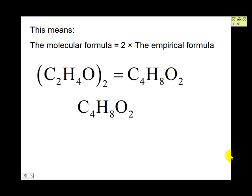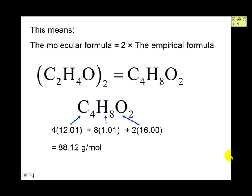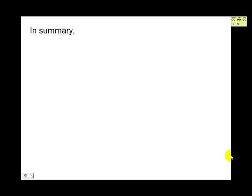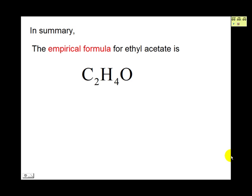We can check our answer by finding the molar mass of C4H8O2: 4 times 12.01 for C, plus 8 times 1.01 for H, plus 2 times 16 for O, adds up to 88.12 grams per mole. The given molar mass was 88.10, so we are correct within experimental error. In summary, the empirical formula for ethyl acetate is C2H4O, and the molecular formula is C4H8O2.